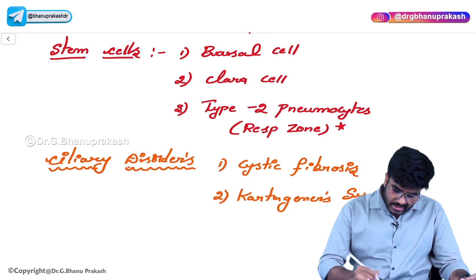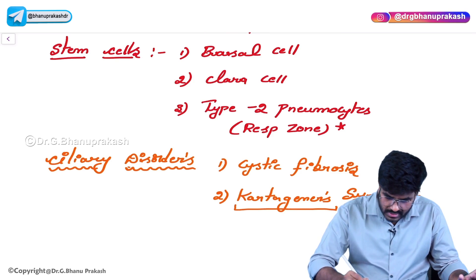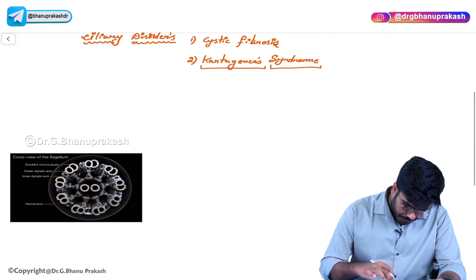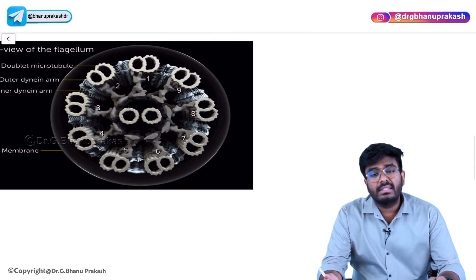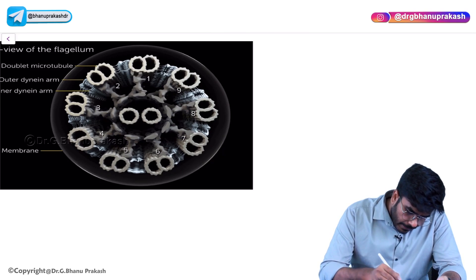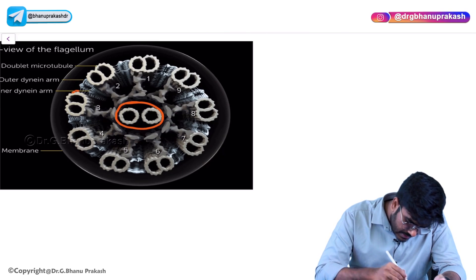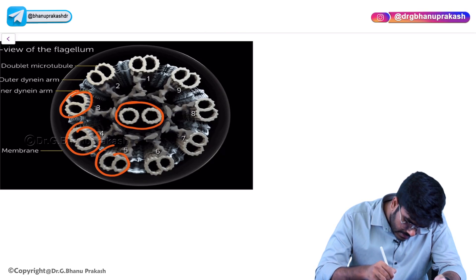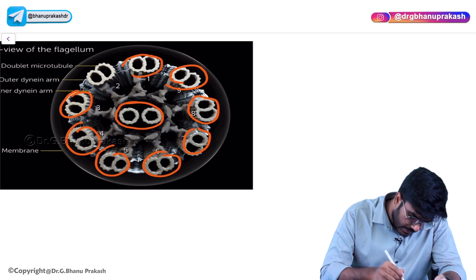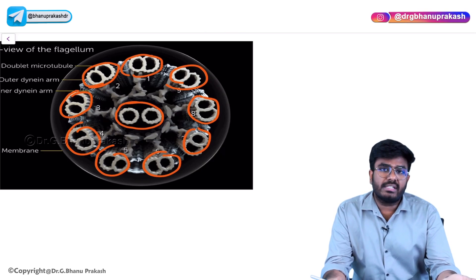First let's discuss about Kartagener's syndrome. You have all studied from class 11th and 12th the cross section of cilia and flagella. In the cross section of cilia and flagella, there are central filaments and peripheral filaments - these are nothing but microtubules. We have already studied the 9 plus 2 configuration.